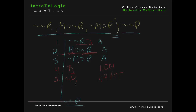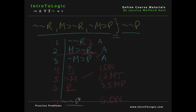Now that we have 'not m', we can use that with line 3 and the rule modus ponens. We derive p from lines 3, 5, and MP. Modus ponens says that if we have a conditional and the antecedent of that conditional, we can derive the consequent — and that's how we get to line 6 with p. Now we just have one more step to get to 'not not p'. Using line 6 and double negation, we can add two negation signs to p and derive 'not not p'. And that's how we do this proof.